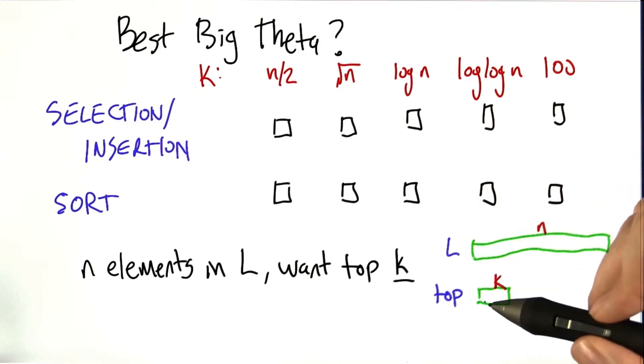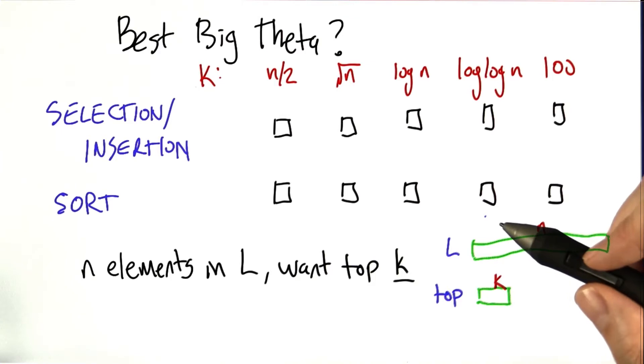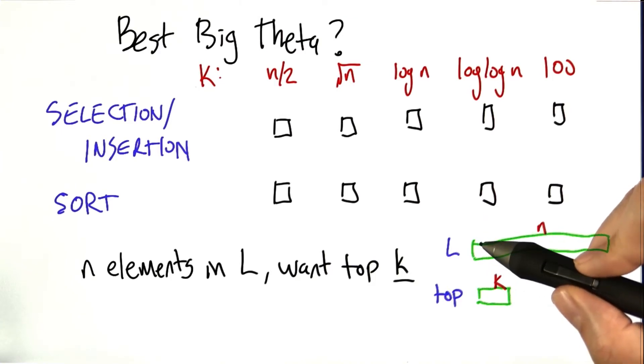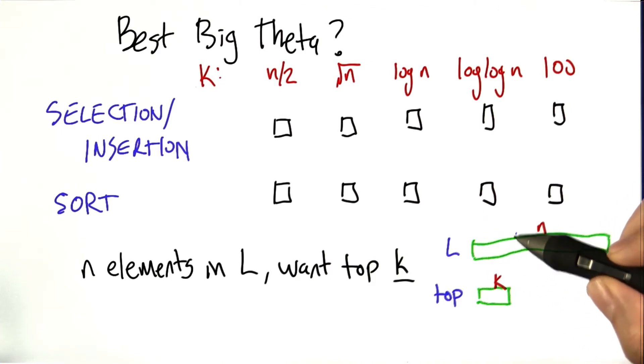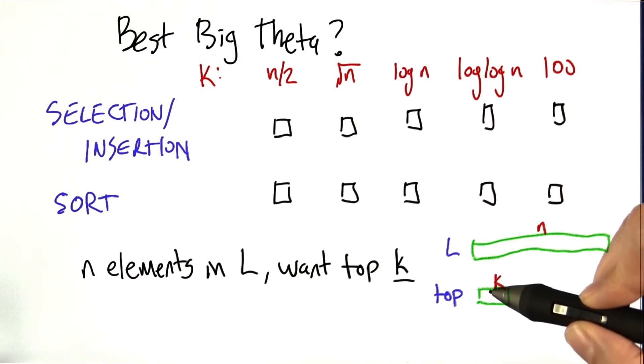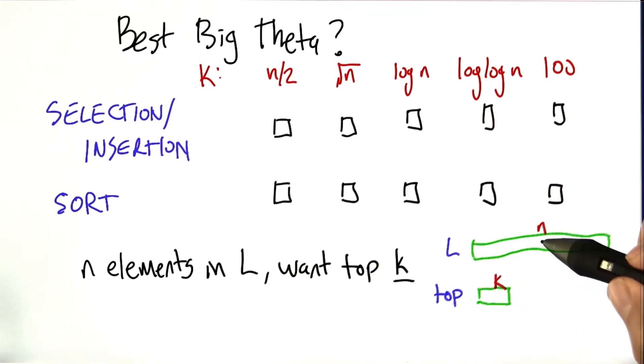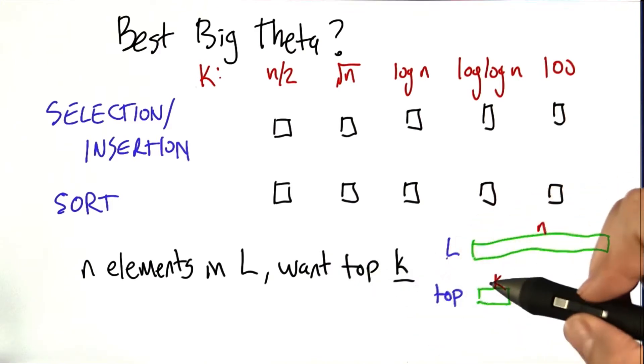If there's n elements in our list and we're interested in the top k, the selection algorithm goes through the elements one at a time, and for each of these n elements it tries to figure out where in this list of k it needs to go. So for each of these n it does an insertion or a selection.